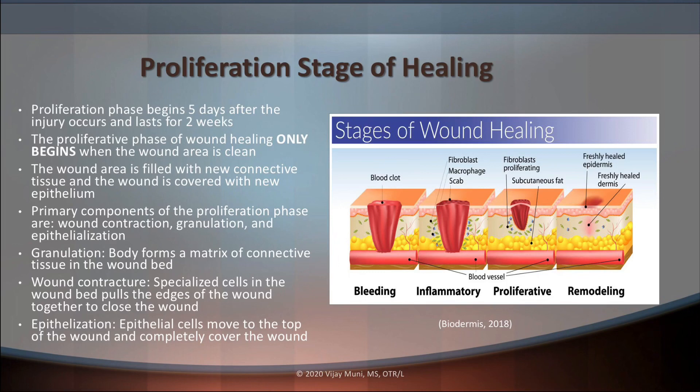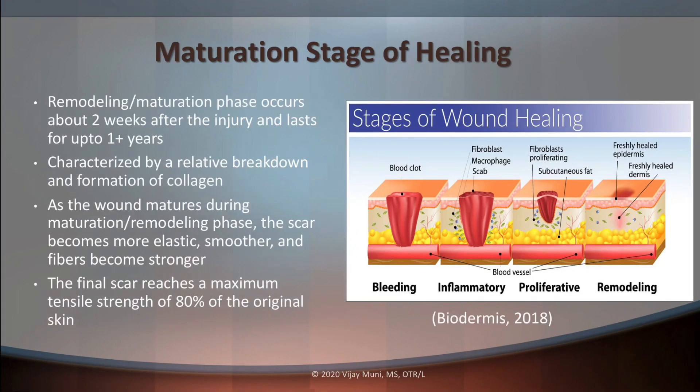There are three primary components of the proliferation phase: wound contraction, granulation, and epithelialization. In granulation, the tissue builds on itself to fill the hole of the wound, forming a matrix of connective tissue in the wound bed. During wound contraction, specialized cells pull together to close up the wound. Finally, with epithelialization, epithelial cells move to the top of the wound and completely cover it.